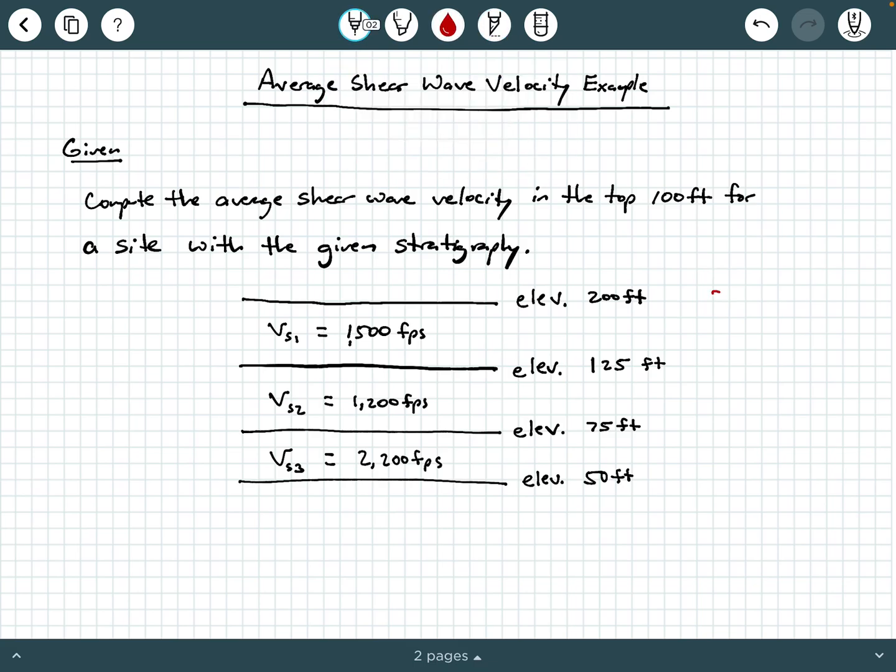So I'm going to go ahead and just note here this first layer is 75 feet. We just say 200 minus 125. The second layer right here is how much? Well, that's just 50 feet. We say 125 minus 75. And then that third layer, of course, is 25 feet.